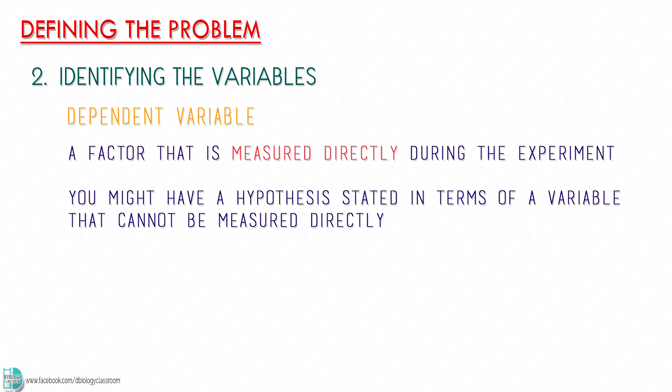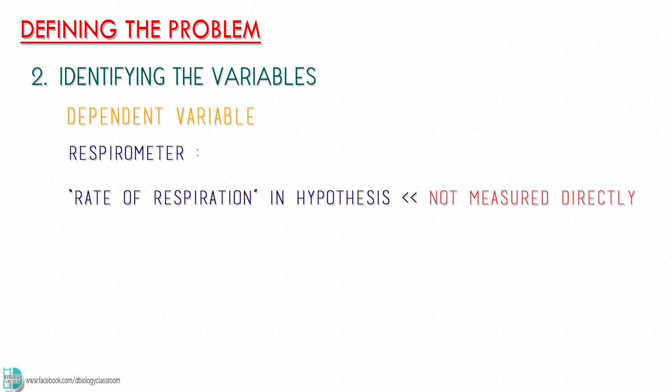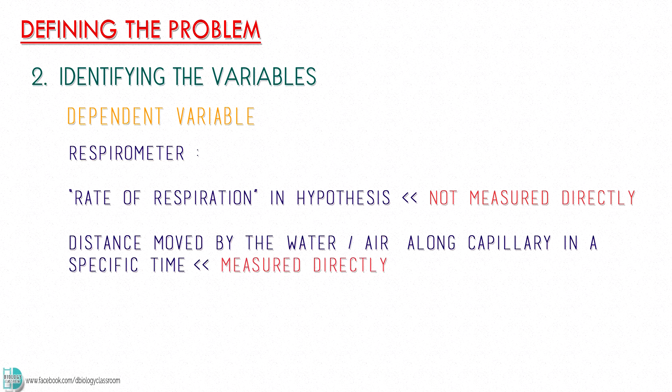Sometimes, you might have a hypothesis stated in terms of a variable that cannot be measured directly. You will be required to identify a measurable aspect of the experiment. For example, when you are using a respirometer, you might mention rate of respiration in the hypothesis. But when you are asked to identify the dependent variable, the answer should be distance moved by the water or air along capillary in a specific time.